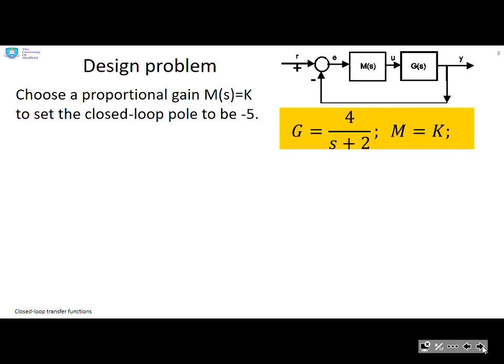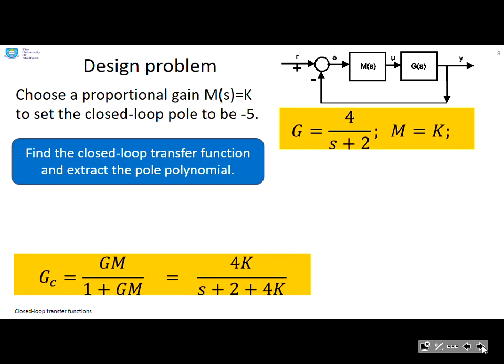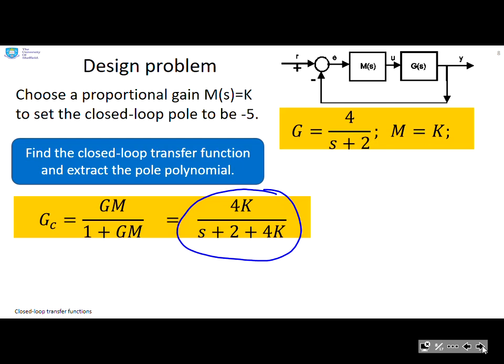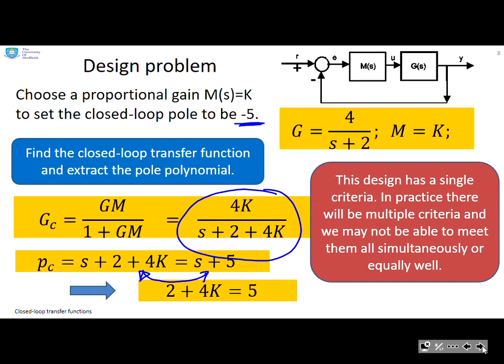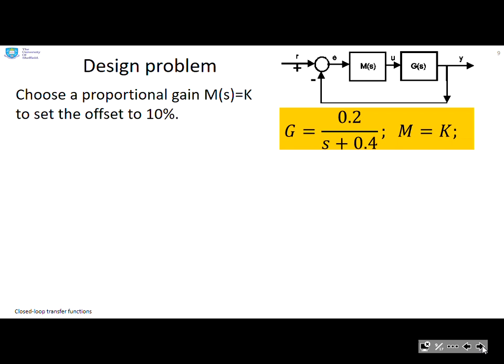Let's look at a design problem. Choose a proportional gain M(s)=K to set the closed-loop pole to be -5. The open-loop system is 4/(s+2). First, find the closed-loop transfer function and extract the pole polynomial: Gc = 4K/(s+2+4K). The closed-loop pole polynomial is s+2+4K, which we want to equal s+5, so 2+4K=5, and you can solve for K. However, this design has a single criteria. In practice, there will be multiple criteria, and you may not be able to meet them all simultaneously or equally well.